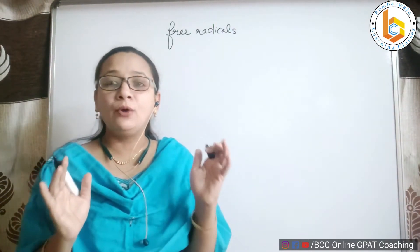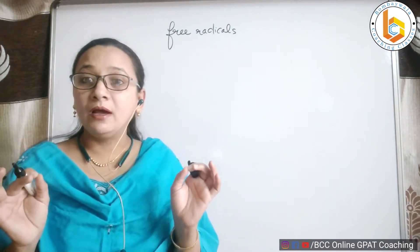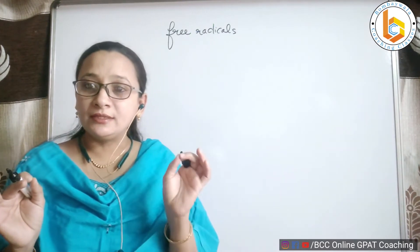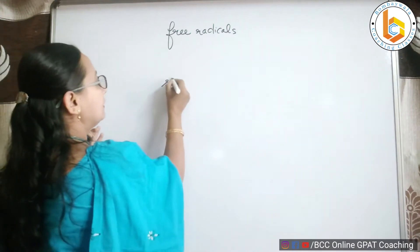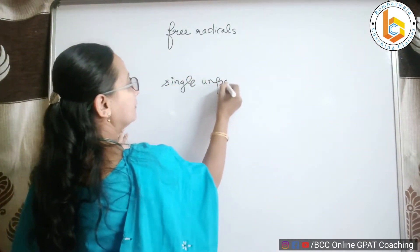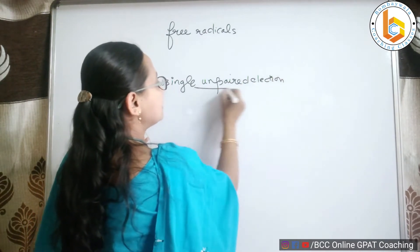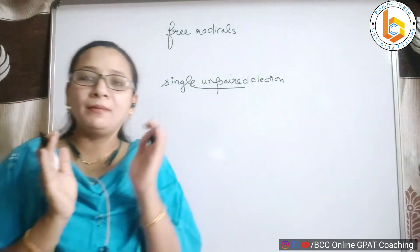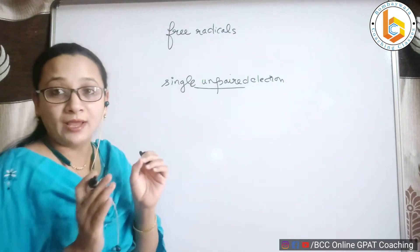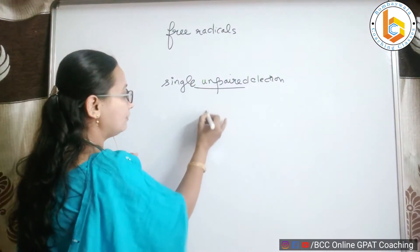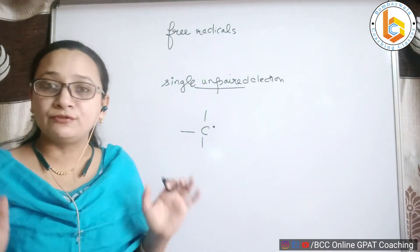In this video we are going to only talk about the definition of free radical. What is free radical and how it is formed? In general, free radical is nothing but a reaction intermediate which contains a single unpaired electron. That means this is my carbon, one, two, three, and one electron only - not a negative charge, not a positive charge.